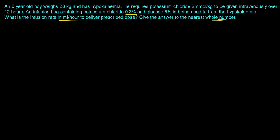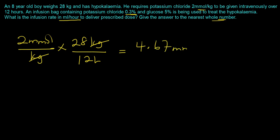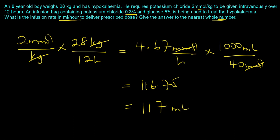The first thing you want to do is use the normalized dosing. You have 2 mmol/kg, the weight of the patient is 28 kilograms, and the IV is given over 12 hours. The kg will cancel out and you end up with 4.67 millimoles per hour. For the 0.3% solution, we know that each liter, which is 1000 ml, contains 40 millimoles of KCl. If we compute this, you have about 116.75, so to the nearest whole number that's 117 milliliters per hour.